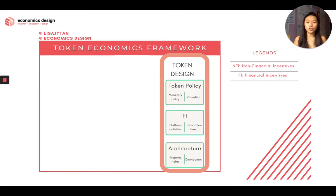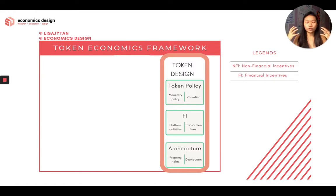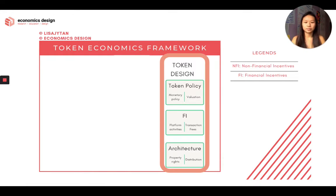Now we're going to look at token design. Token design itself — tokens are the incentive itself. So we want to design tokens in a way that incentivizes specific kinds of behaviors. When we talk about token design, we have to take into consideration two things: the first one is the function of the tokens, and the second one is fungible or non-fungible tokens. In token design, we're going to look at monetary token policy, financial incentives, as well as architecture. And today we're going to focus on token policy.